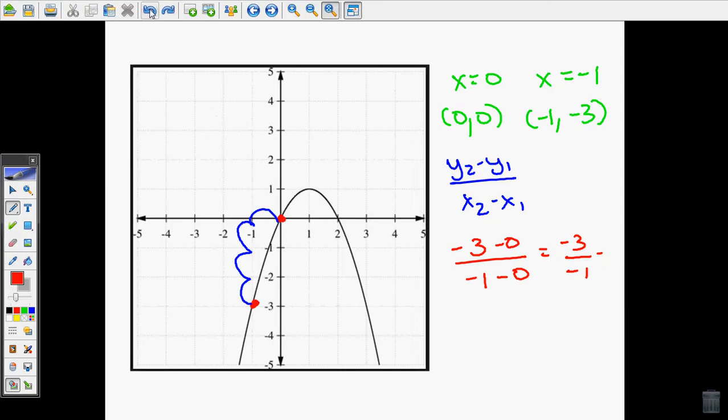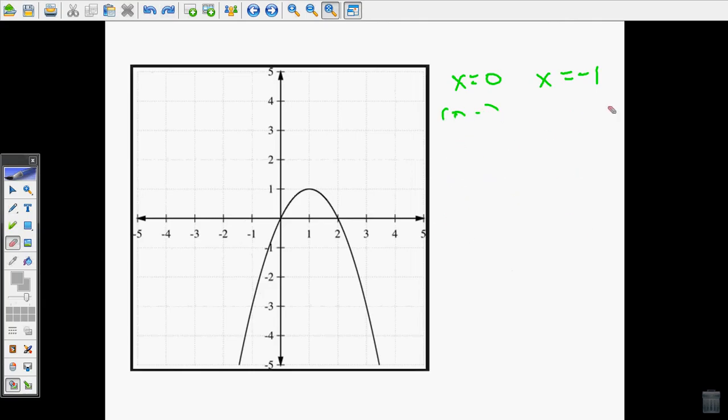Just to show you that it's not the same for every set of points, let's do it for two different points. Let's say we'll do the rate of change for when x is 1 to when x is 2. When x is 1, y is 1, and when x is 2, y is 0.